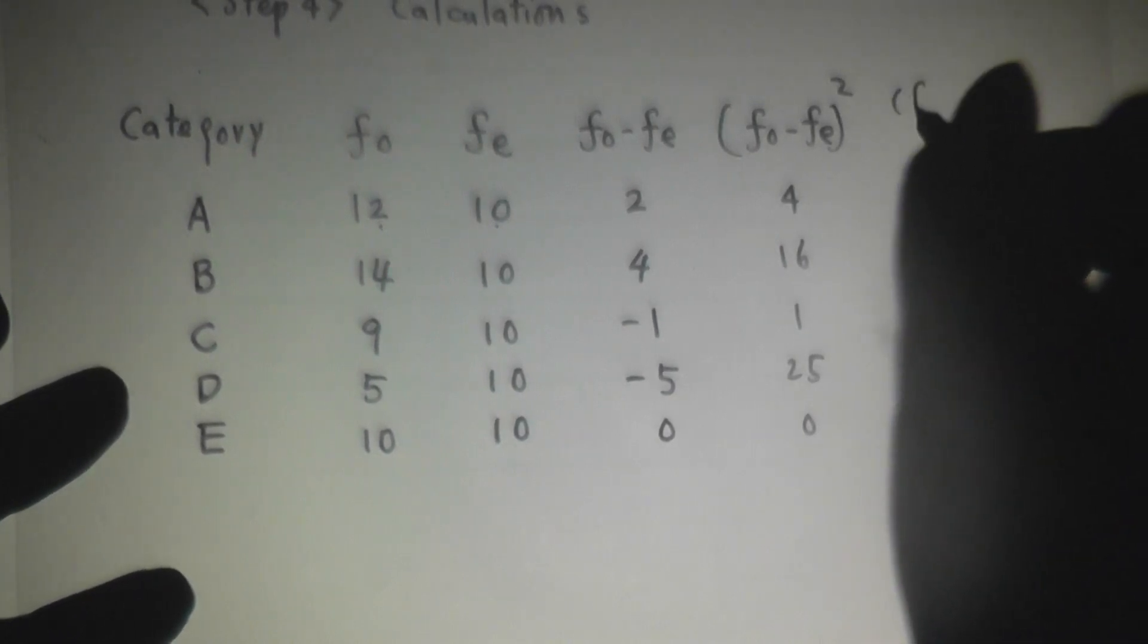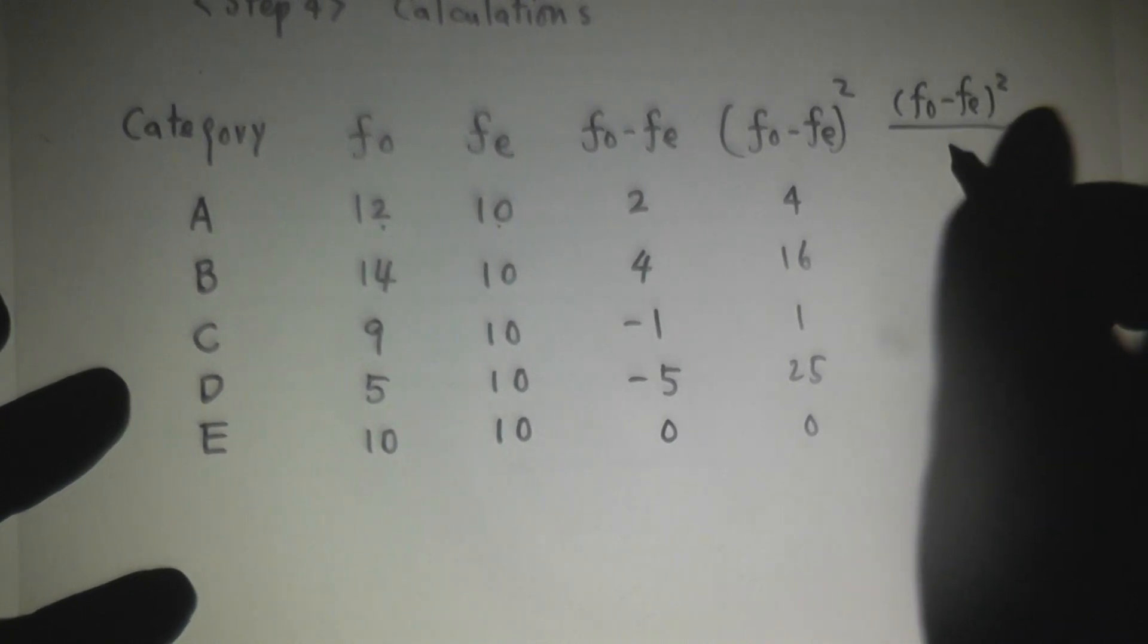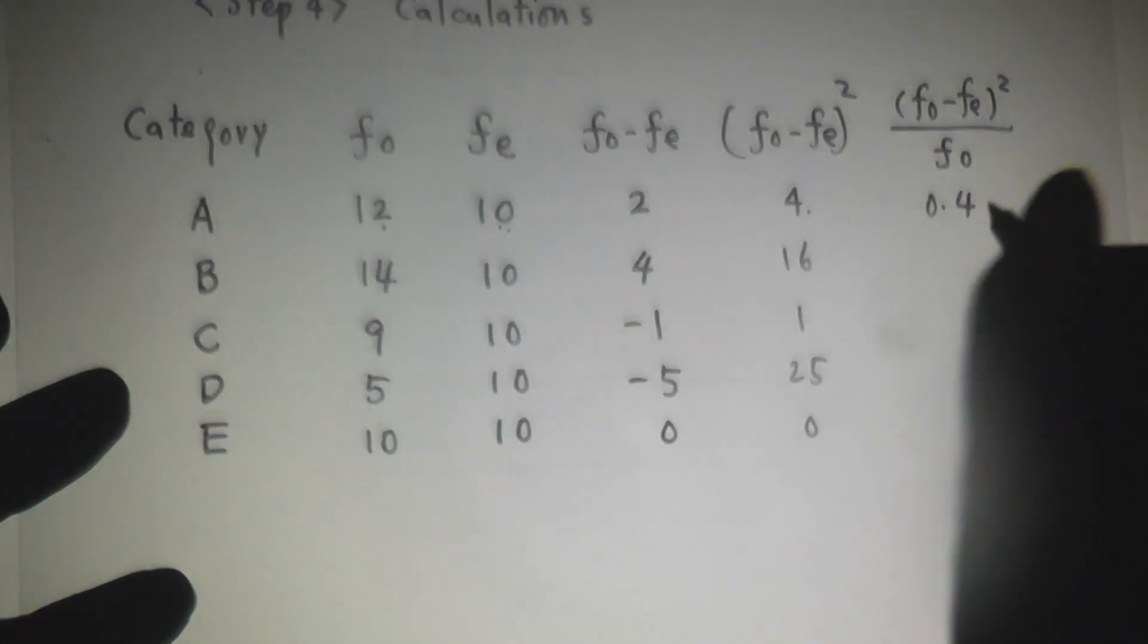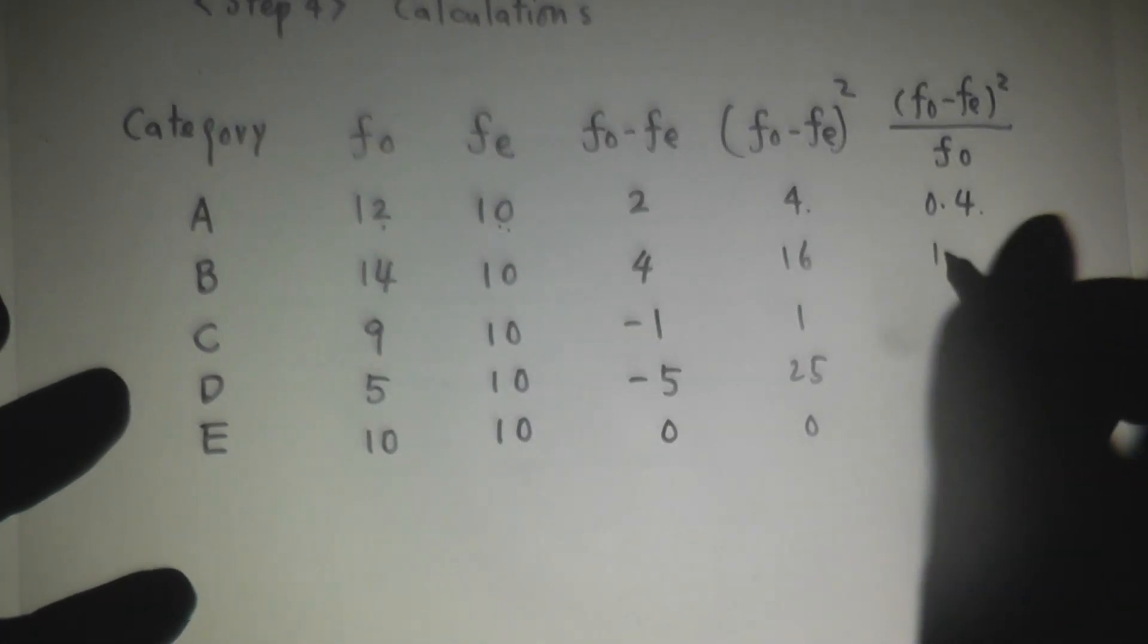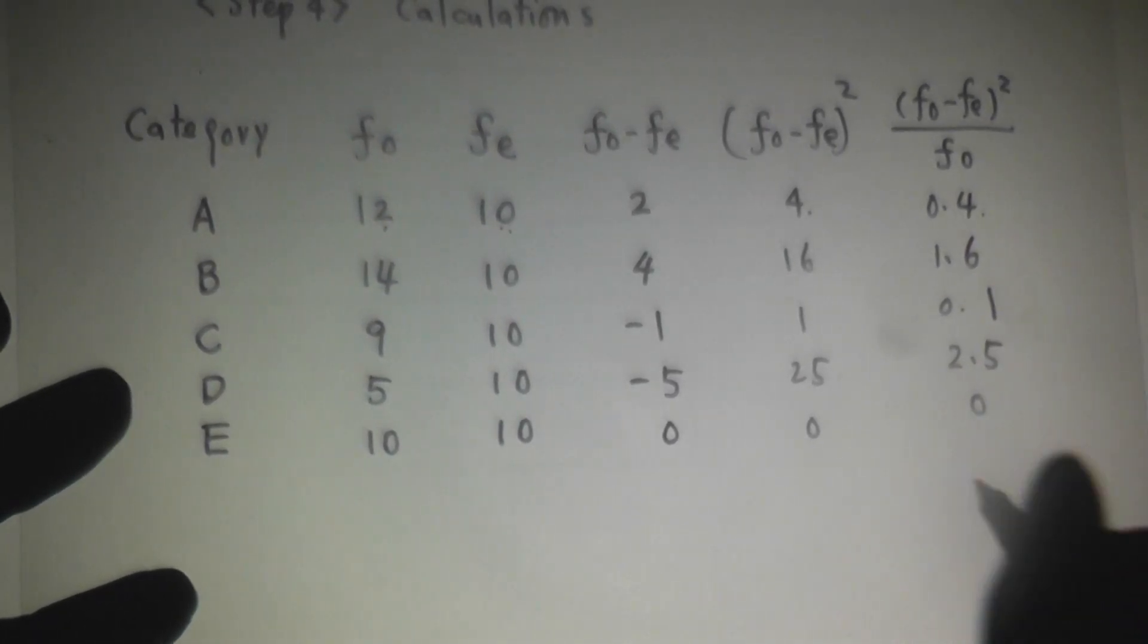And then this number, remember, FO minus FE squared, we divide it by FE. It becomes 4 divided by 10, which is 0.4. Second one, 1.6. Next one, 0.1. Next one, 2.5 and 0.